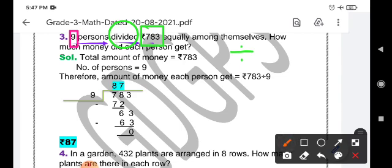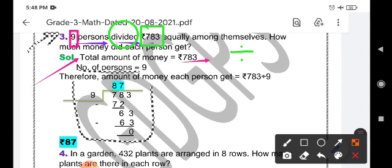You will start with the statements: total amount of money is ₹783. Then you will tell number of persons is 9, given here. Next step will be therefore amount of money each person will get, that we will do. That is shown here. We will also do it.